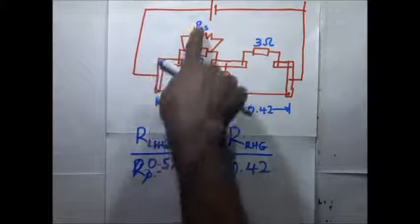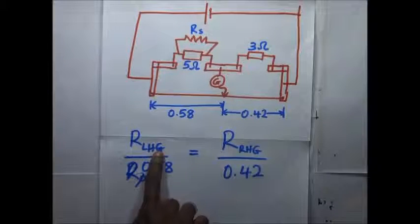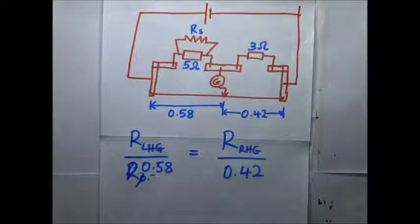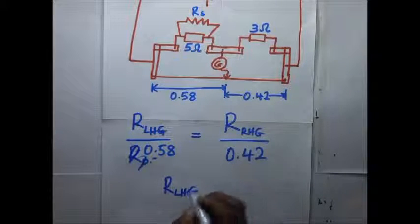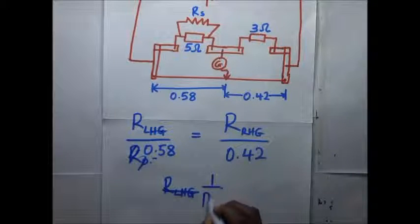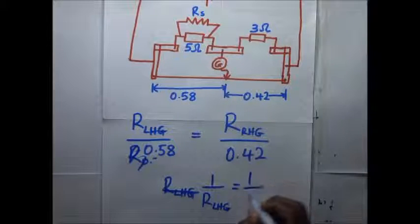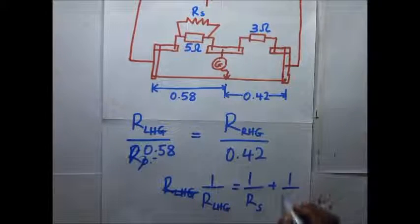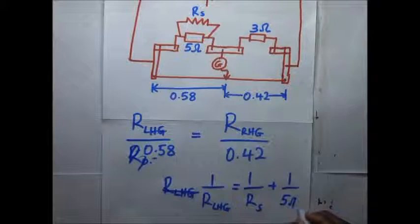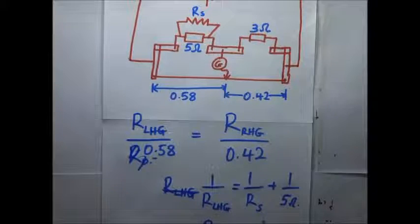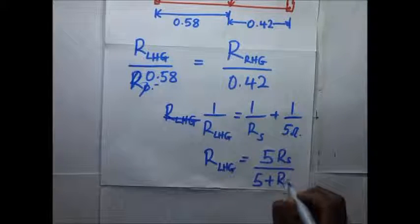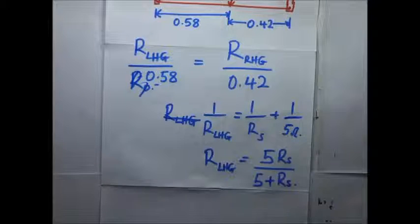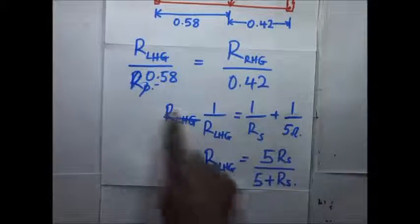The resistance of the left hand gap has two resistors in parallel — Rs and 5 ohms. To find the effective resistance: 1 over R_left equals 1 over Rs plus 1 over 5. Making R_left the subject, we find the resistance of the left hand gap equals 5Rs divided by (5 plus Rs) — the product divided by the sum of those resistances. We substitute this into the balance equation.